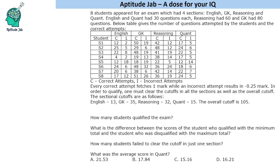C is correct attempts and I is incorrect attempts. For every correct attempt there is one mark, and an incorrect attempt is minus 0.25 marks. In order to qualify, one must clear the cutoffs in all sections as well as the overall cutoff. The sectional cutoffs are: English 13, GK 35, Reasoning 32, Quant 15, and the overall cutoff is 105.